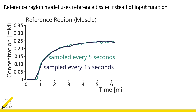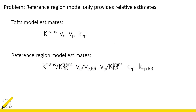However, while the TOFTS model gives us K-trans, VE, and VP, the reference region model gives us relative parameters — for example, K-trans in the voxel relative to K-trans in the reference region. So if we want the actual K-trans we have to know what K-trans is in the reference region itself. The common approach is to use muscle and look at muscle perfusion studies in the literature, but the problem is that muscle varies across patients, so a single value will not be appropriate for all patients.